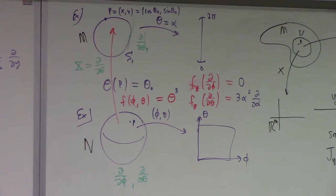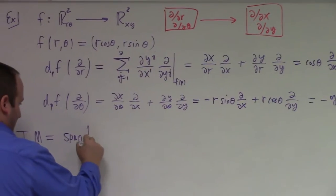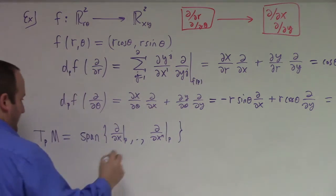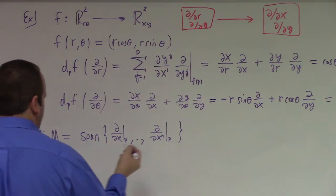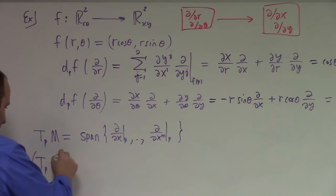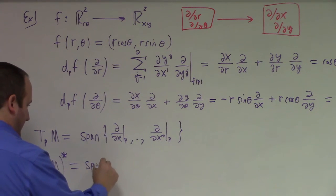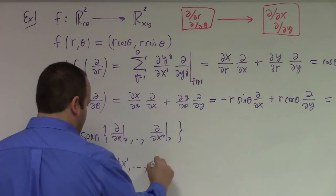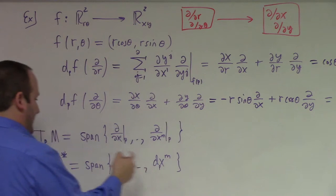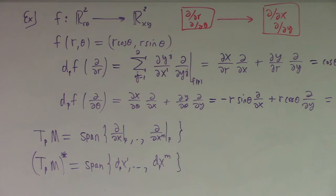Once you have a tangent space, what's the next move? The dual space. So if the tangent space to M is the span of partial partial x1 at P through partial partial xn at P — M-dimensional — then the dual space, in the usual sense of linear algebra, is in fact the span of dx1 through dxm. Technically I should say at the point P, but I won't always write those. The differentials are in fact the dual basis.